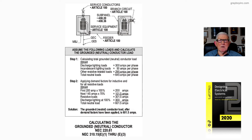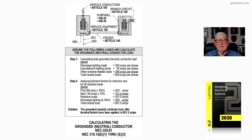Since this is a sub-panel — we call it a sub-panel because it's a sub to the service — it's Articles 408.20 and 408.36 that you have to review. But to isolate the neutral and bond the grounded bar to the panel, go to 408.40.